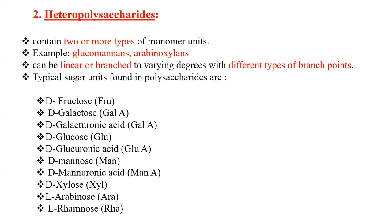Heteropolysaccharides, as the name explains, naturally contain two or more types of monomer units. Examples include glucomannan, which contains glucose as well as mannose in the chain, and arabinoxylans, which contain arabinose as well as xylose monomer units. These heteropolysaccharides can be linear or branched to varying degrees with different types of branch points.